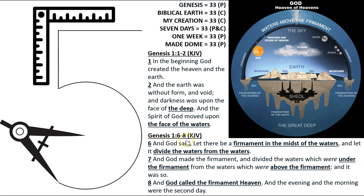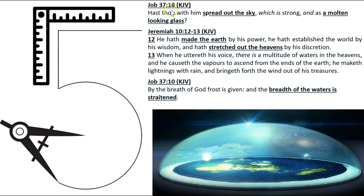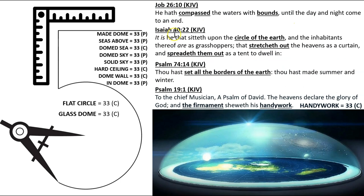Genesis 1:6-8: 'And God said, Let there be a firmament in the midst of the waters, and let it divide the waters from the waters. And God made the firmament, and divided the waters which were under the firmament from the waters which were above the firmament. And it was so. And God called the firmament heaven.' Job 37:18: 'Hast thou with him spread out the sky, which is strong and as a molten looking-glass?' Isaiah 40:22: 'It is he that sitteth upon the circle of the earth... that stretcheth out the heavens as a curtain, and spreadeth them out as a tent to dwell in.' Flat circle, glass dome, seas above, domed sea, domed sky, solid sky, hard ceiling, dome wall, in dome — all 33.